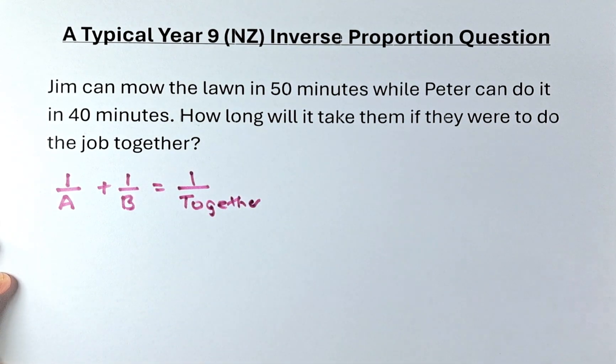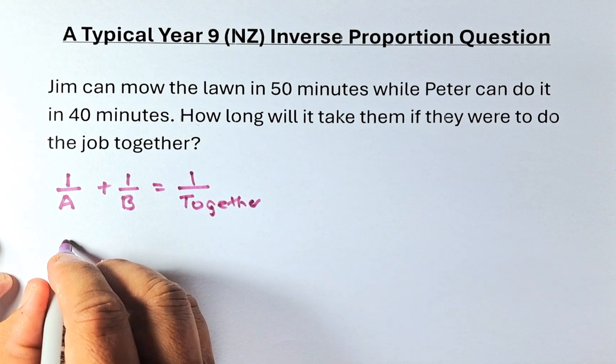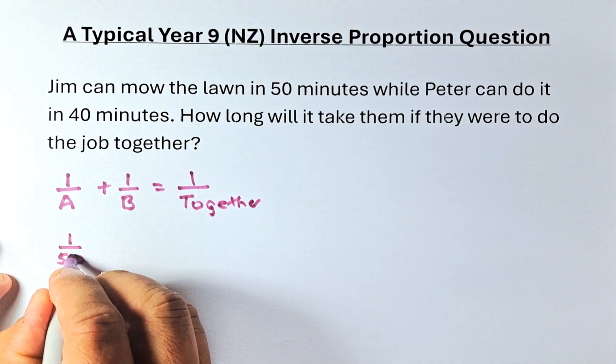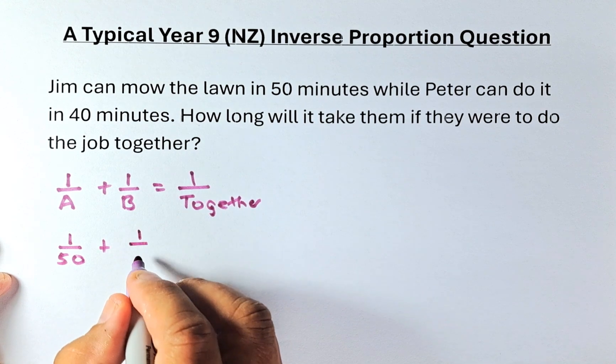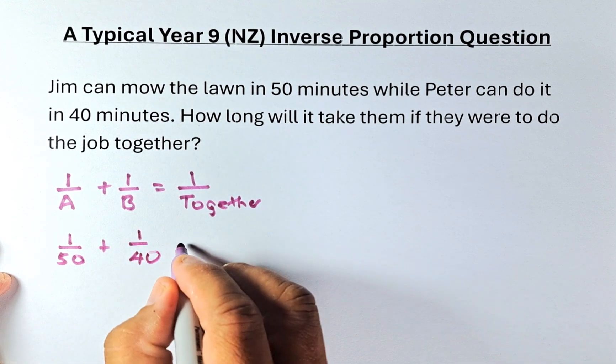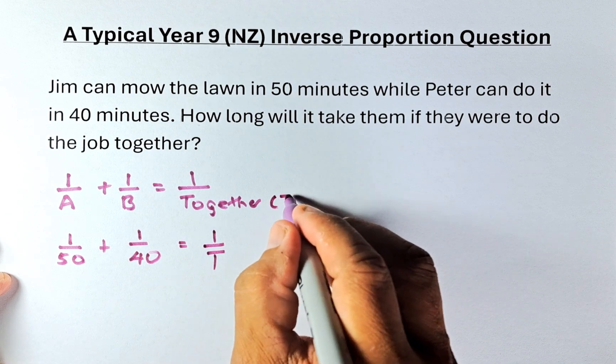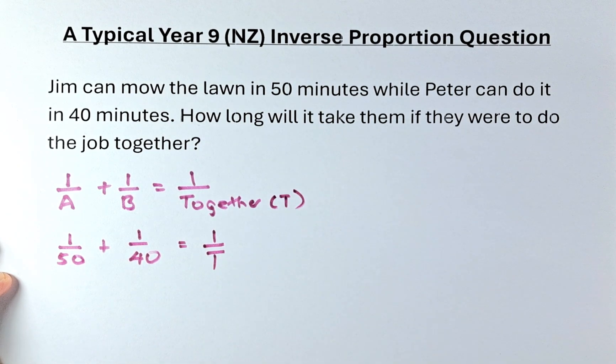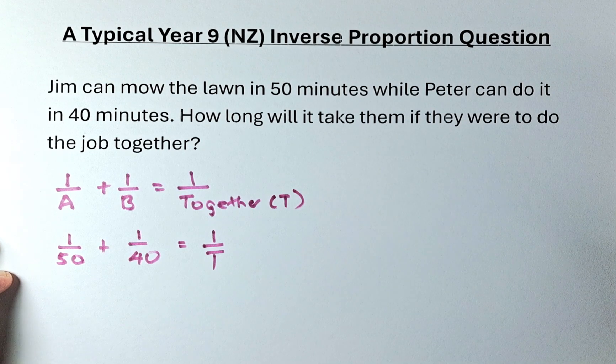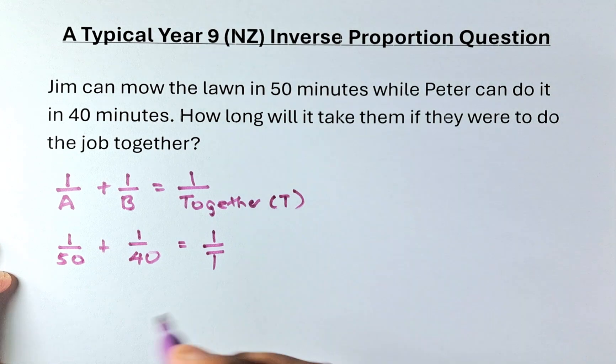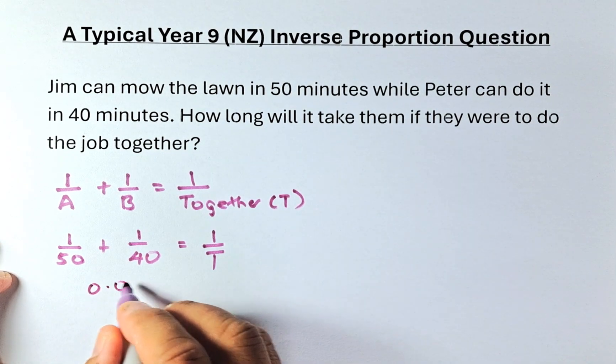So to do that, person A is Jim, so we take 1 divided by 50. And person 2 is Peter, so we take 1 over 40. And we get 1 over T. For short form together, we represent it with the letter T. So if you put your calculator, 1 over 50 and 1 over 40, when you add them up, it's going to be 0.045.